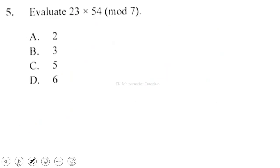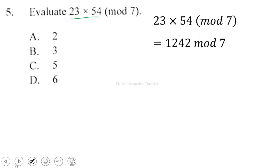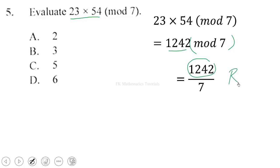Question 5: evaluate 23 × 54 mod 7. First, multiply 23 by 54 to get 1242. Now we find 1242 mod 7 — that is, the remainder when 1242 is divided by 7. Dividing: 1242 ÷ 7 = 177 remainder 3. So the remainder is 3, and the correct answer is 3.